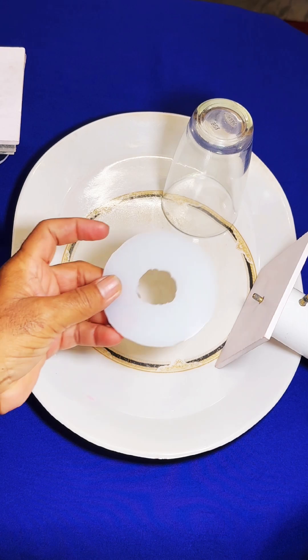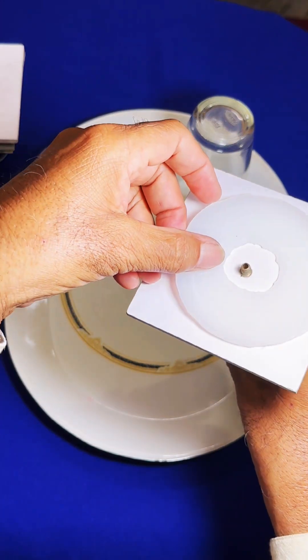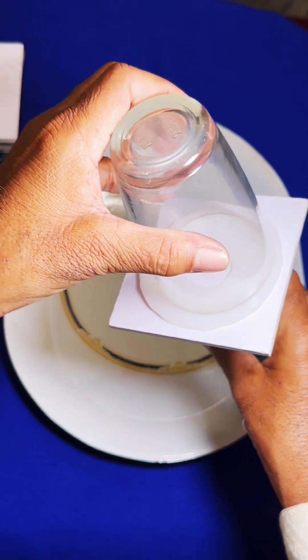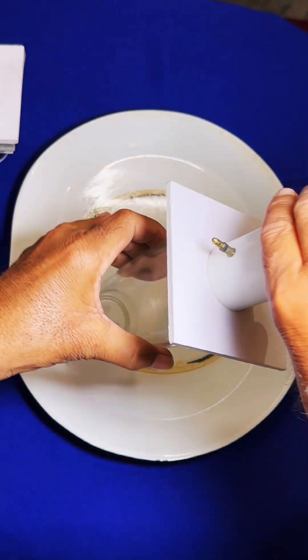A silicon sheet can also be used. Place it here and thereafter place the tumbler here, and thereafter make it upside down. And then the same process we have to follow.